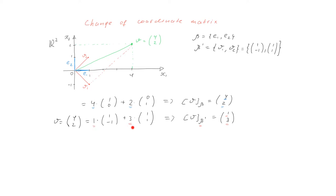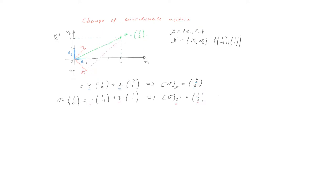You can ask yourself how I guessed this linear combination. This is illustrated in the figure, and in this particular case it was not very difficult to just guess. But you can imagine that in more complicated spaces and with more complicated bases it will not be very easy to find the coordinates in the new basis. So there must be some systematic way of doing it instead of guessing. This is exactly what the change of coordinate matrix is used for. We denote the change of coordinate matrix by Q, and its columns are exactly the coordinates of the new basis vectors — the vectors from beta prime written in the old basis beta.